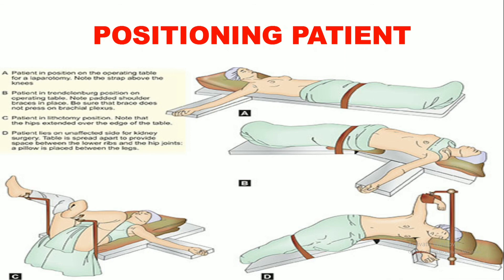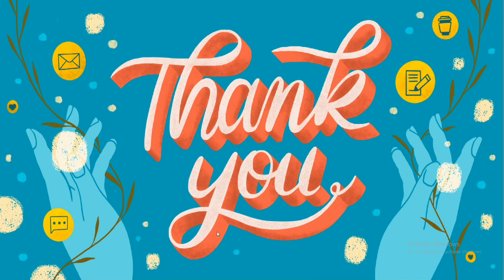This shows a laparotomy procedure position. Position B is the Trendelenburg position. Position C is the lithotomy position, used for labor, vaginal surgery, or cystoscopy. Position D is the kidney surgery position. This covers all the topics on intraoperative care. If you have any doubt, please leave a comment. Thank you.